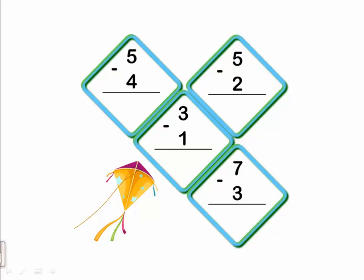The next one: five minus four. Which one is the smaller? Yes, four. We will count after four till five. After four: five. How many are left? One. So five minus four equals one.